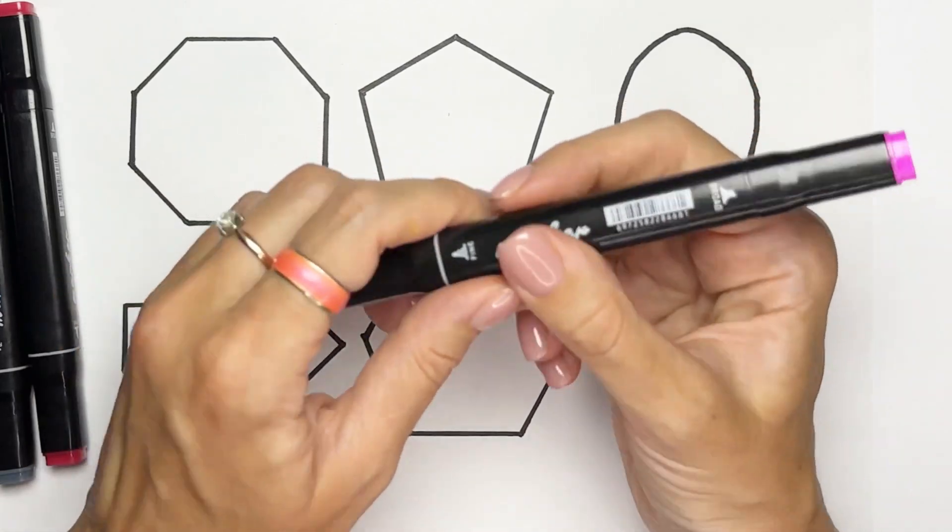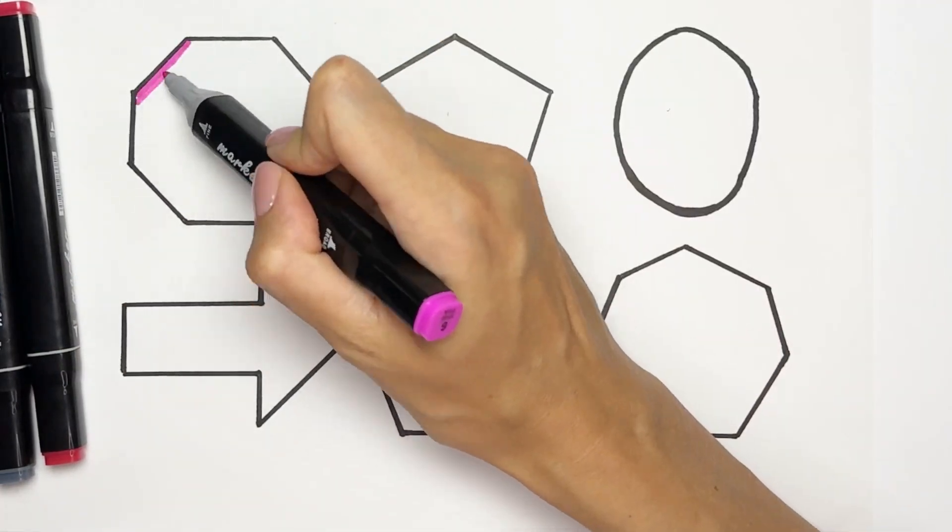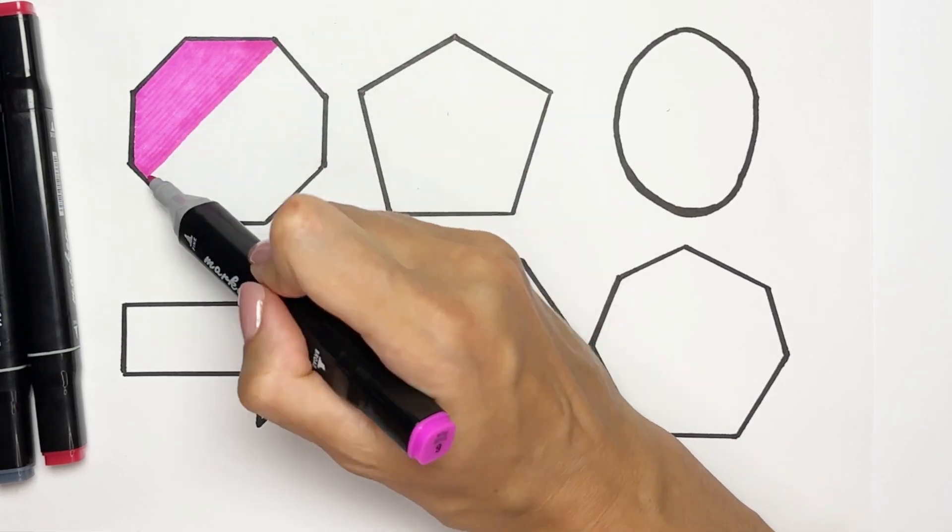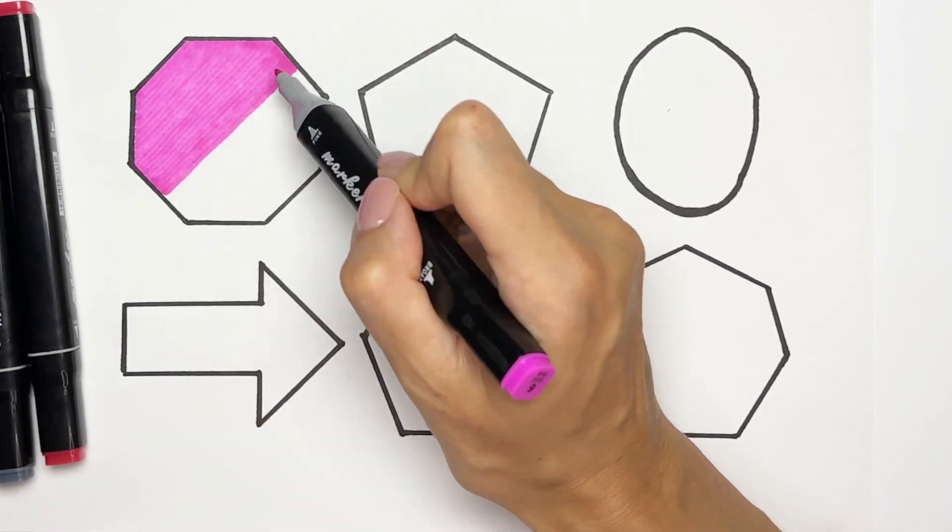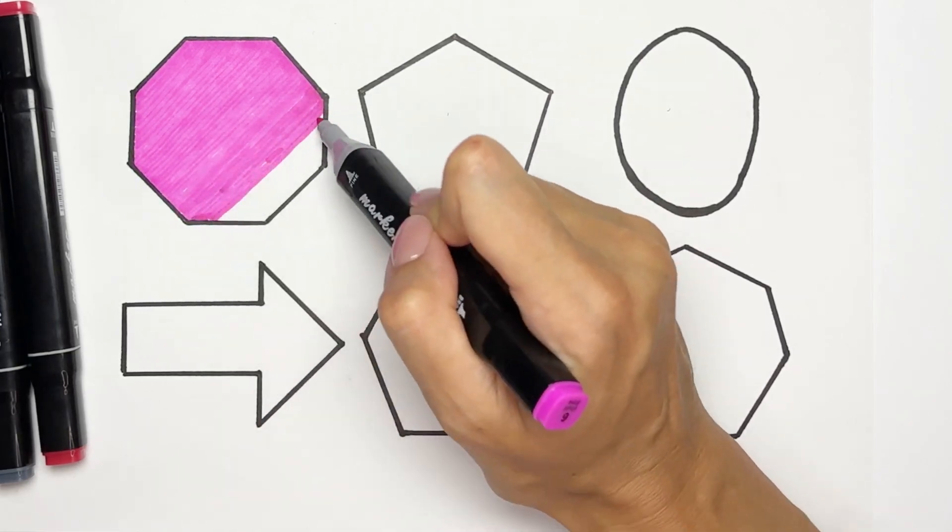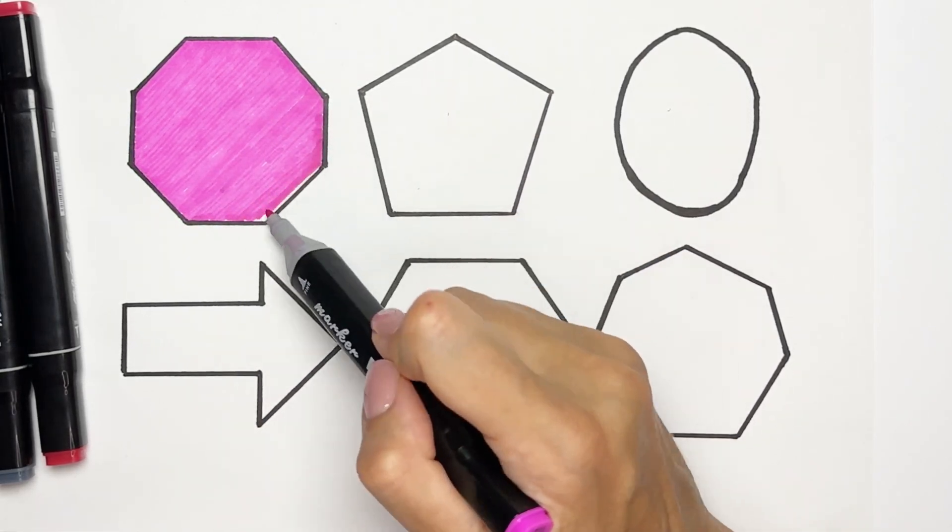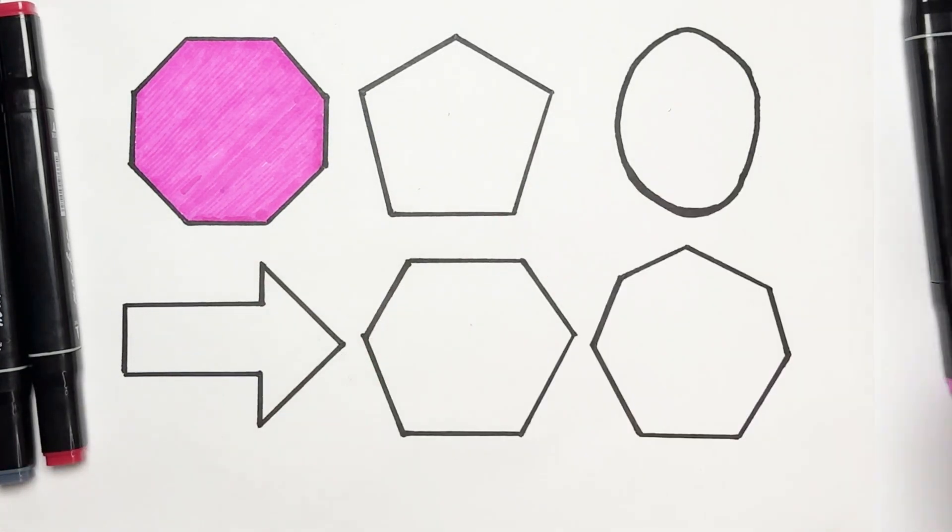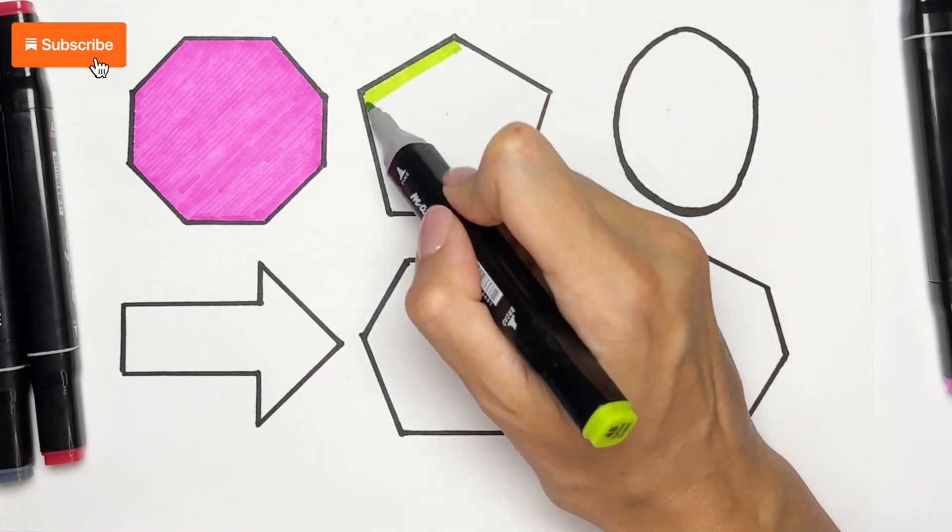I'm taking pink color for octagon. Pink octagon. Next one is pentagon. Light green color for pentagon.